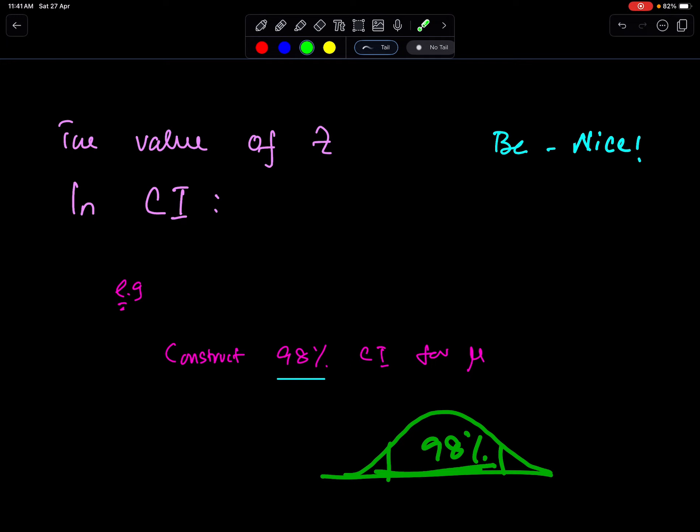Because of symmetry these two areas will be 1% each. Because 100 minus 98% makes 2%, and when you divide 2 by 2 you will get 1% each.